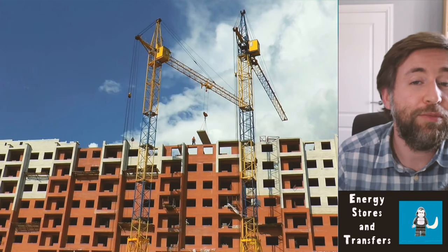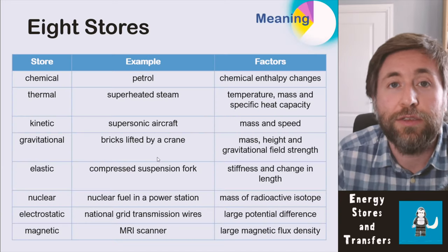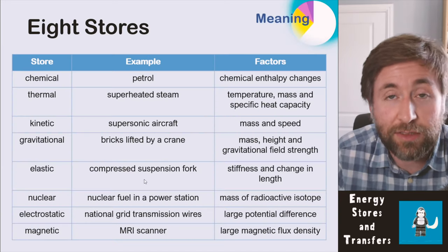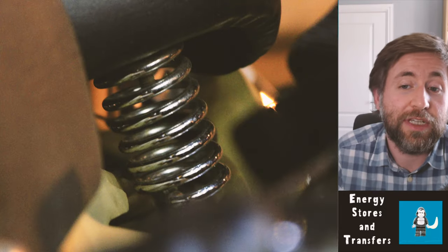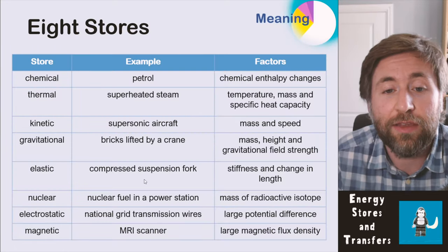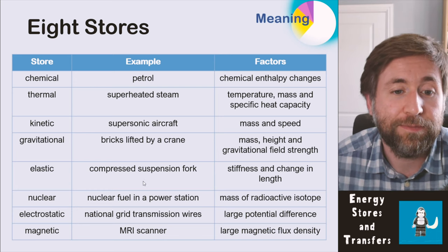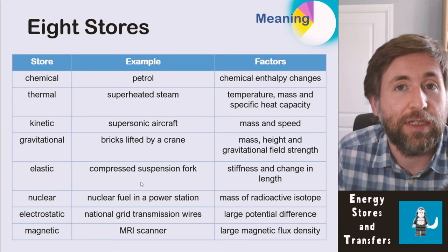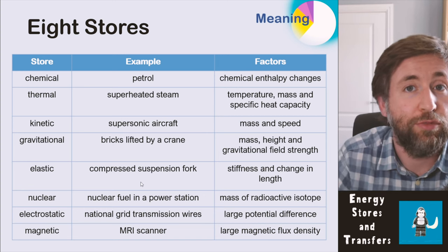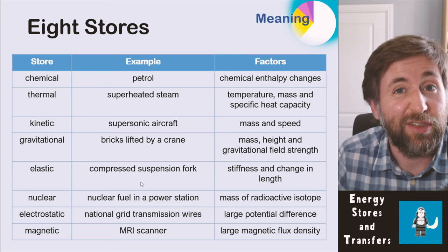A large gravitational store might be heavy bricks lifted by a crane through a high height. A large elastic store might be a compressed suspension fork — something compressed with a large force. The factors are stiffness and change in length: the more it's compressed, the more energy stored. A large nuclear store might be the nuclear fuel in a nuclear power station — more uranium means a larger nuclear store.